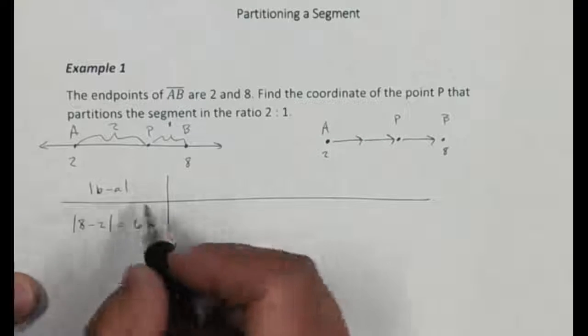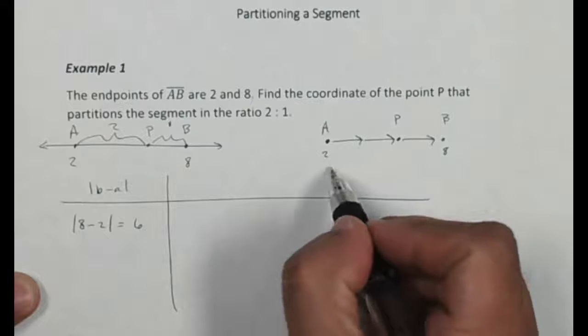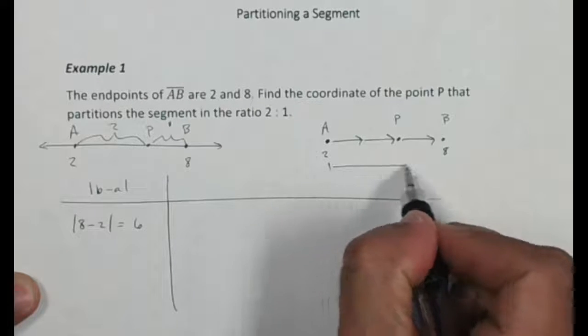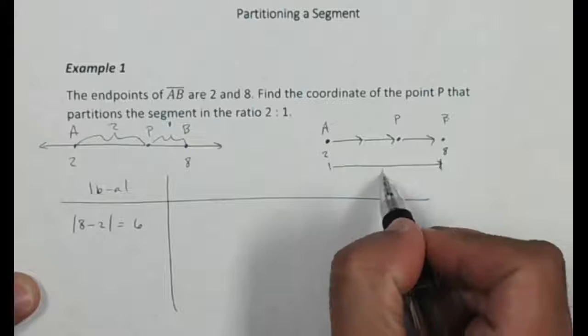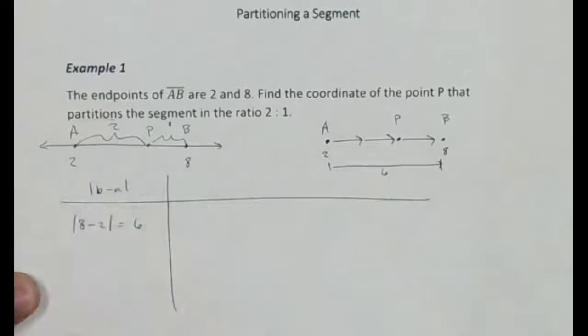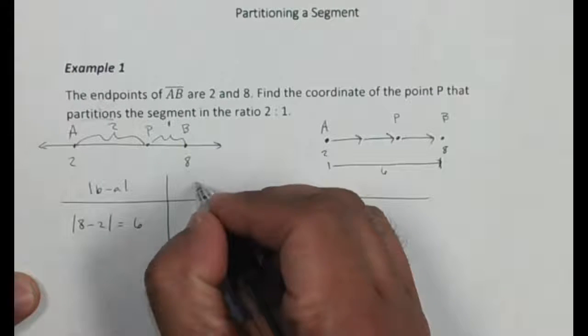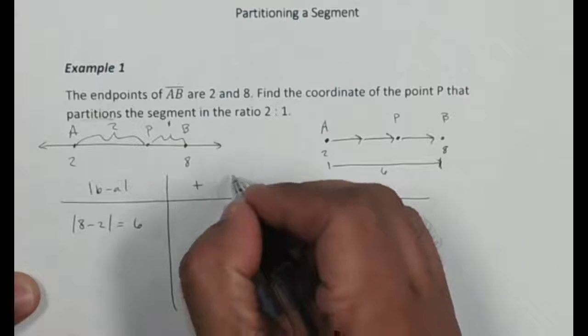Okay, so first we want to find the overall distance. Then, so that tells me the distance from here to there. The overall distance is 6. Okay, but now we've got to partition this 6. So what we need to do next is I want to take my ratio, and I want to add the two parts.